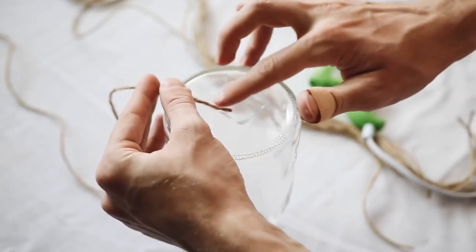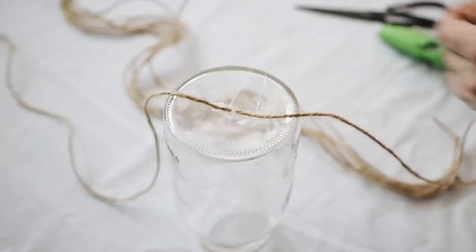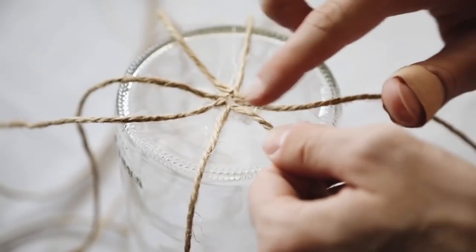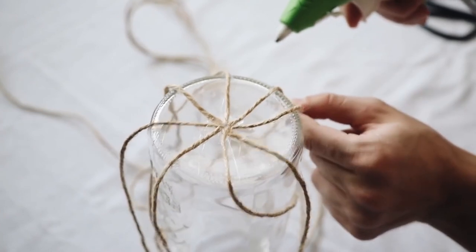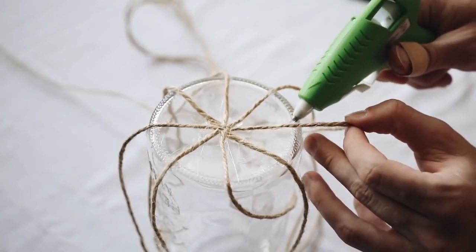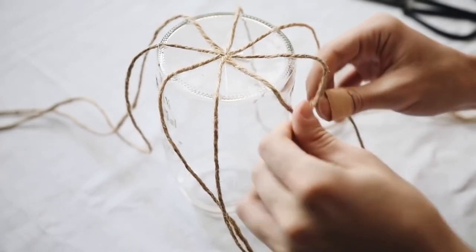...six or eight pieces. I'm going to start by gluing down my pieces in the center. I actually did end up using eight strands, and you're going to glue them so that you have eight evenly spaced sections on the bottom of your mason jar.